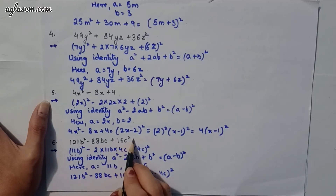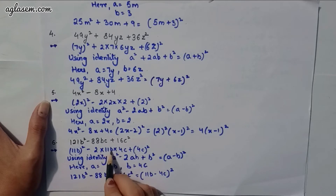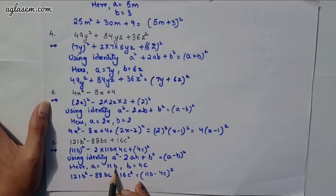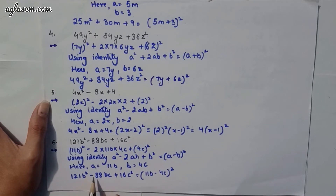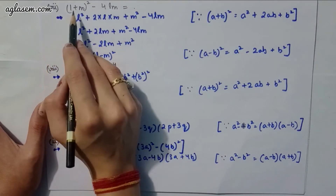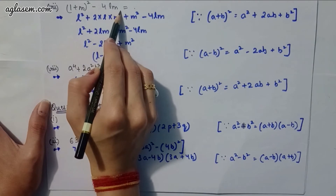Sixth part: 121b² − 88bc + 16c². We write this as (11b)² − 2·(11b)·(4c) + (4c)². Using the identity a² − 2ab + b² = (a − b)², with a = 11b and b = 4c, we get 121b² − 88bc + 16c² = (11b − 4c)².